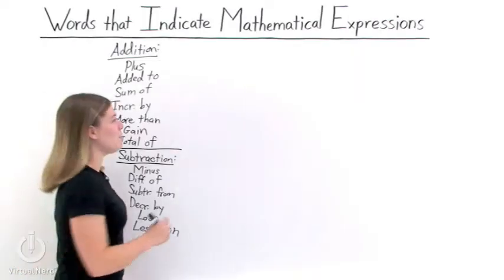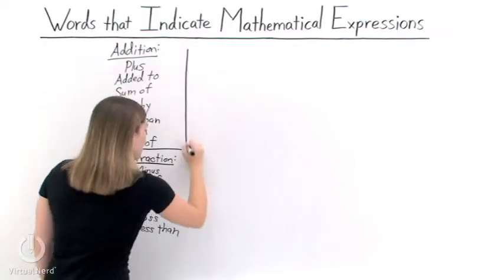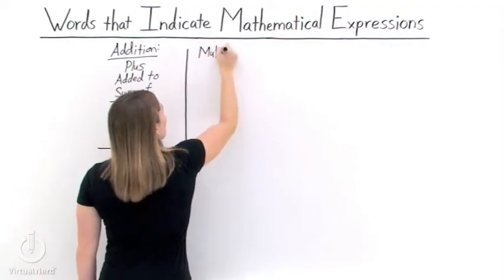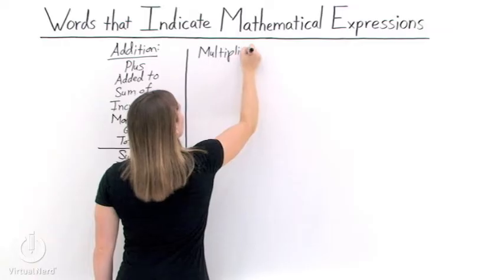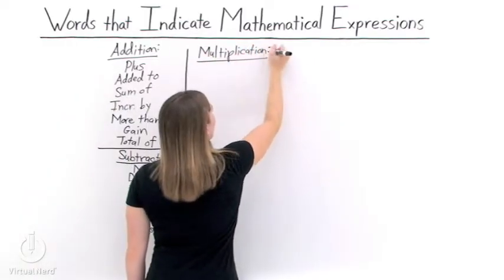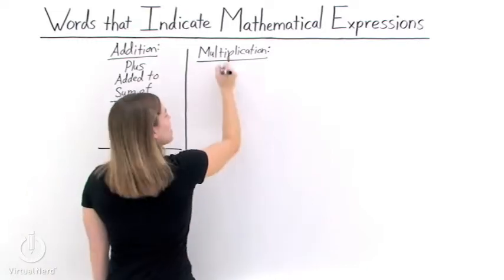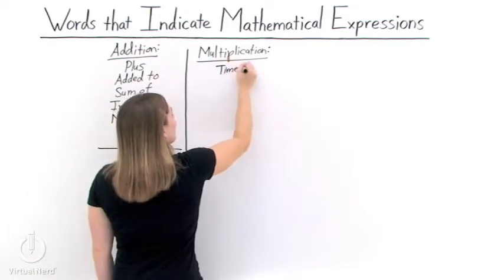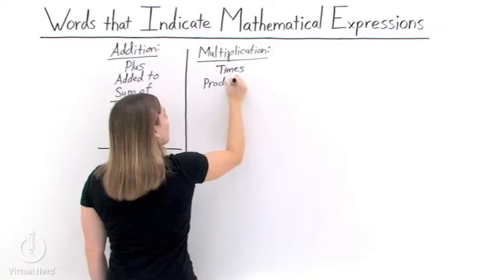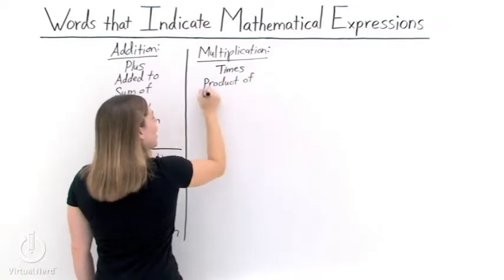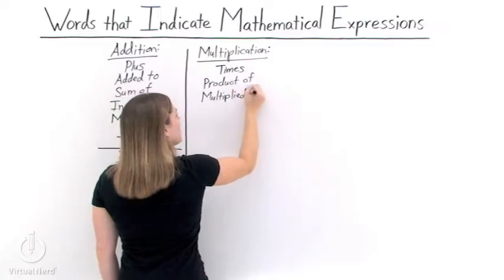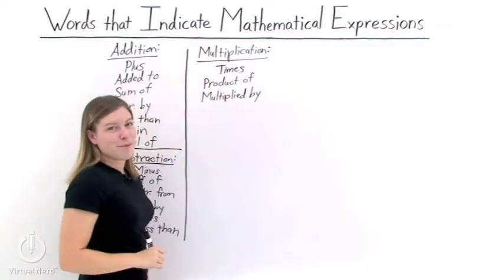Next, let's look at some words that indicate multiplication. When we see these words, it means that we're supposed to multiply: times, the product of, and multiplied by. Seeing any of these words means that we need to multiply.